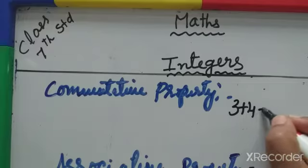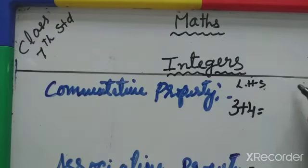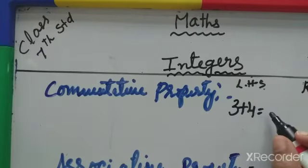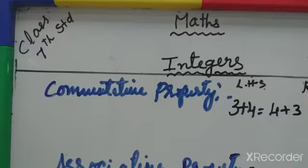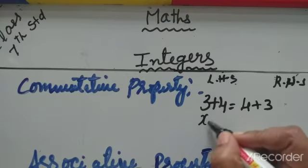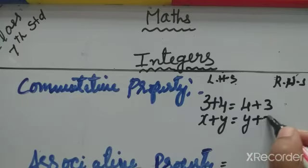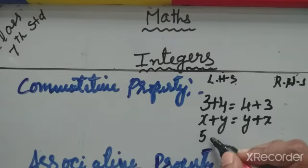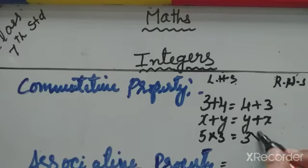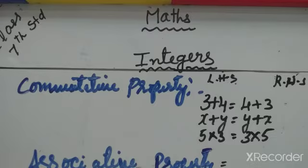For example, 3 plus 4 is given on the left-hand side. We have to write the right-hand side equation. For the commutative property, we just reverse: 3 plus 4 becomes 4 plus 3. Then x plus y becomes y plus x. Also, 5 into 3 will become 3 into 5 — just reversing the numbers or letters.